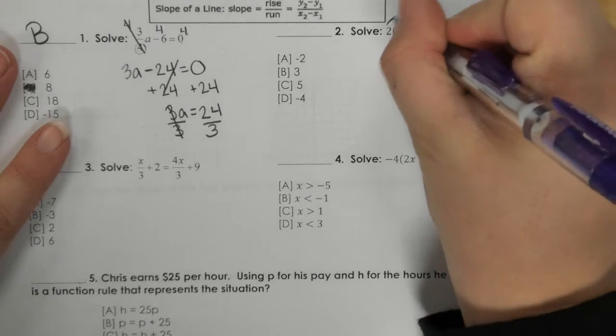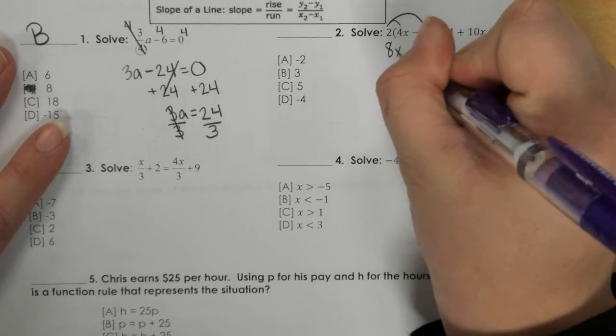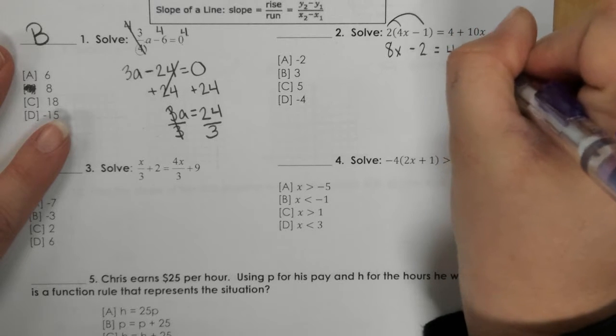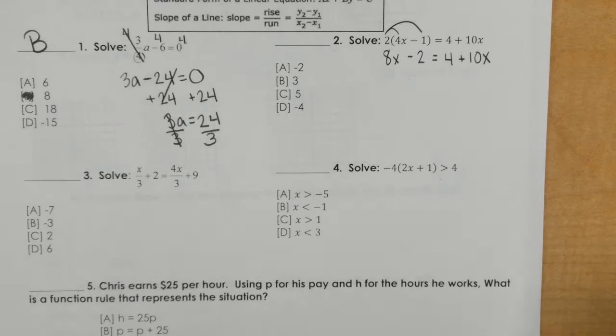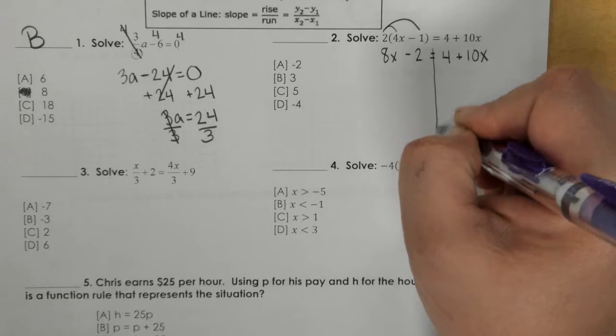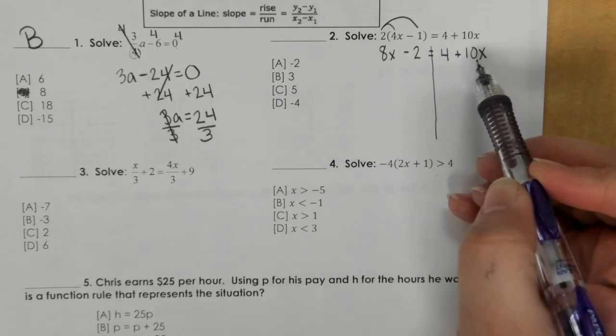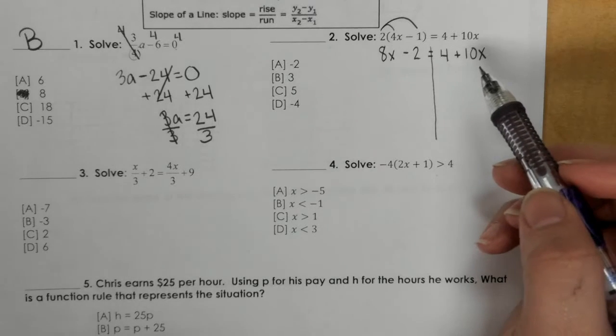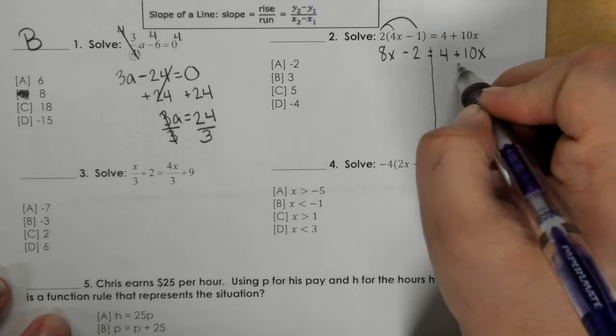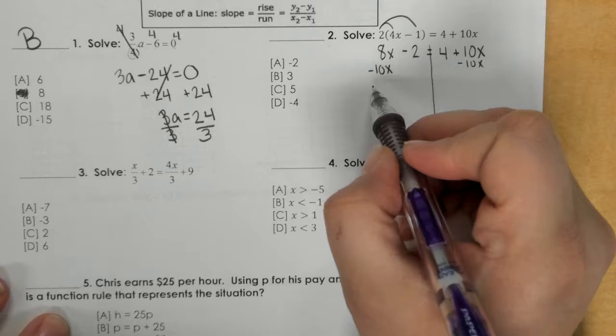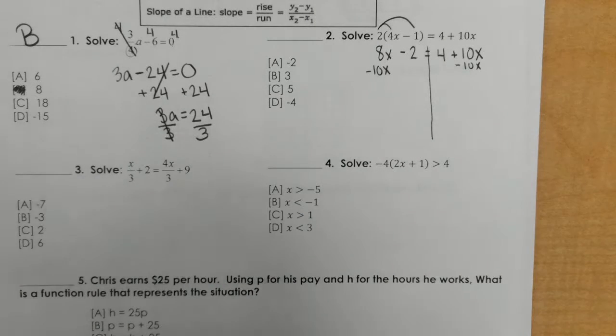For number two we're going to distribute the 2 and I have 8x and then a negative 2. I bring down the 4 and the 10x. Then I see that I have variables on both sides, so we're going to bring the term 10x to the left side. It's a positive 10 so we're going to subtract 10 from both sides. Then 8 minus 10 is negative 2x.